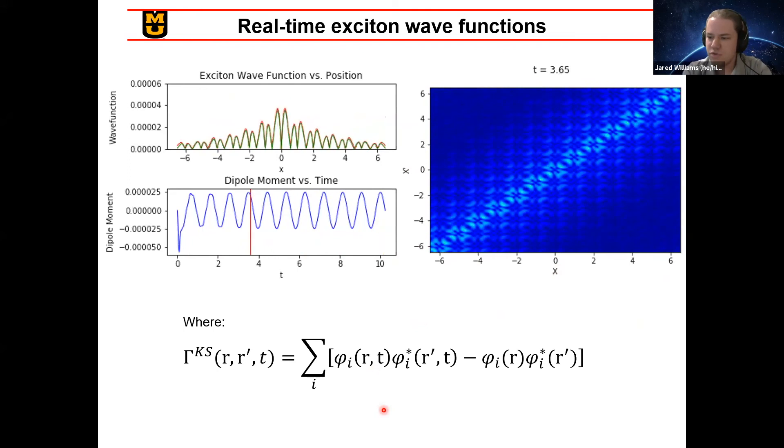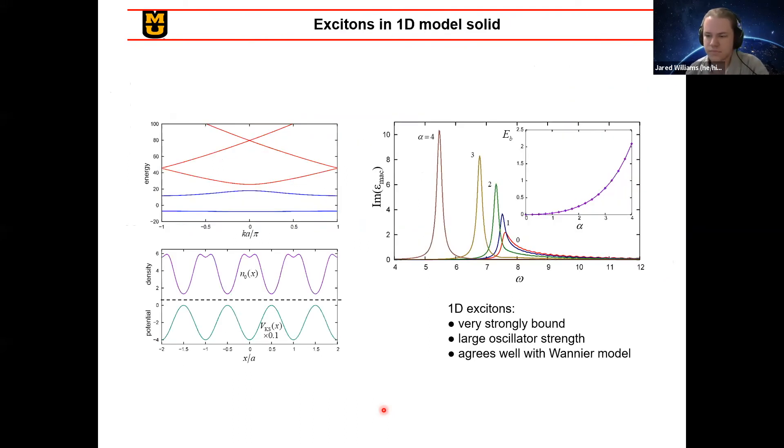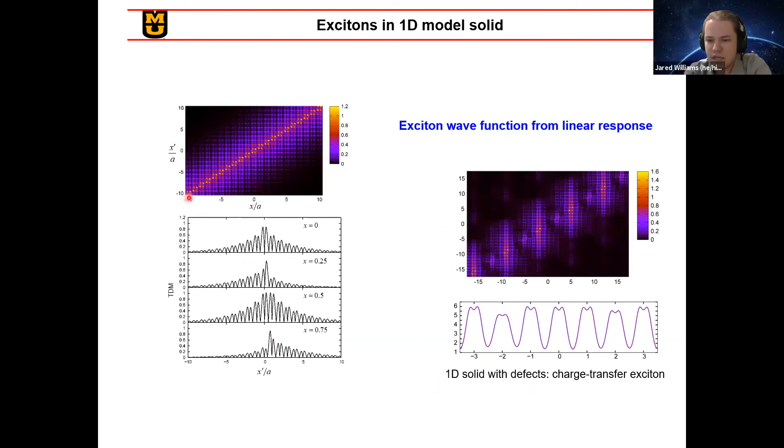So now I want to go ahead and talk about just a few more ways we can look at this system. A few more knobs we can turn, one of which is we can mess around with the strength of the exchange and correlation kernel, this alpha. And we see that when we do that, the exciton peak shown here going from zero to one to two to three to four gets farther back and much stronger. And looking at a more dense collection of these points, you can see the strength of the exciton actually increases exponentially with the strength of the exchange correlation kernel.